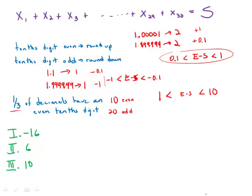I'm going to take this second inequality for the odds and multiply it by 20. So this is going to be negative 20, and then on the other side negative 2. And I know that the sum of these 20 integers with odd tenths digits, the difference between the real and the estimate has to be somewhere between negative 20 and negative 2.